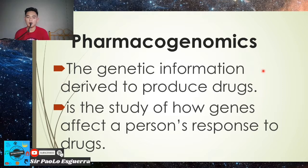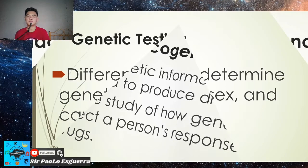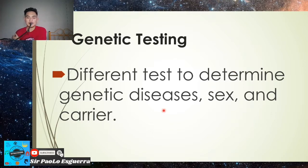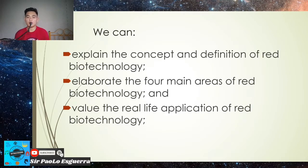The last area is genetic testing, which uses different tests to determine genetic diseases, sex, and carrier status. The results can confirm or rule out a suspected genetic condition and help determine a person's chance of developing or passing on a genetic disorder. For example, if diabetes runs in a family, genetic testing can determine whether a child may acquire the disease.